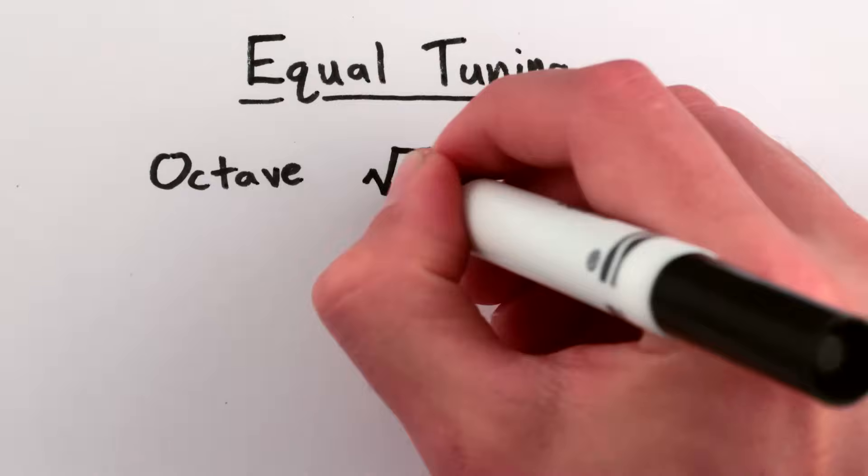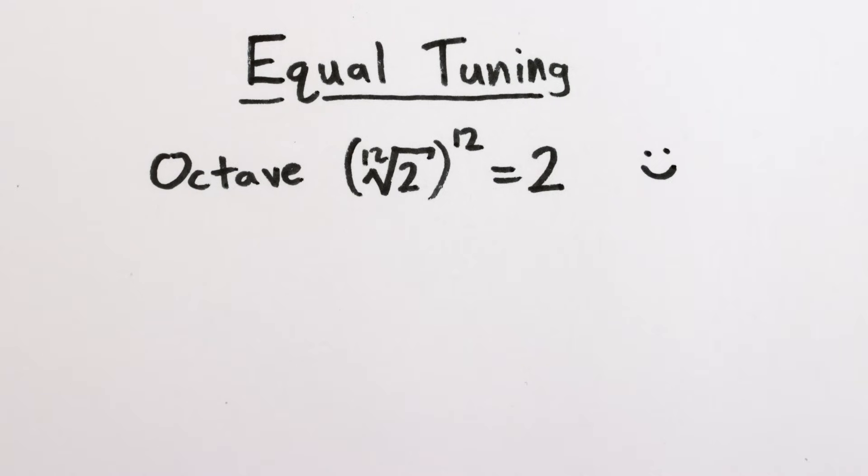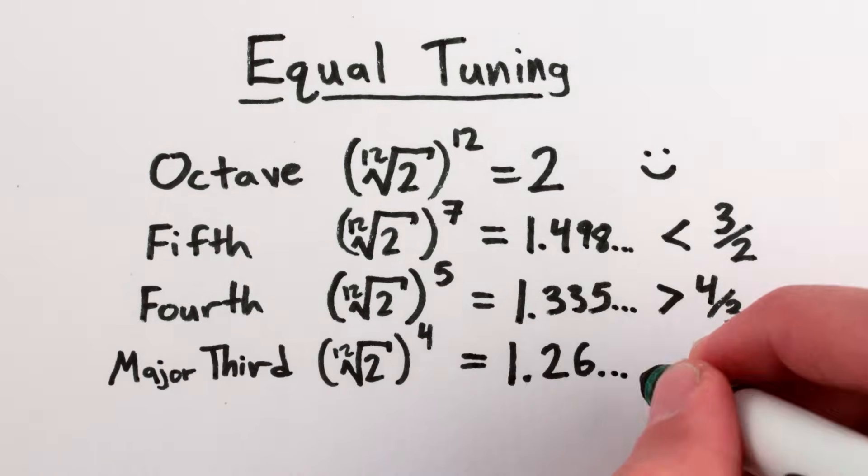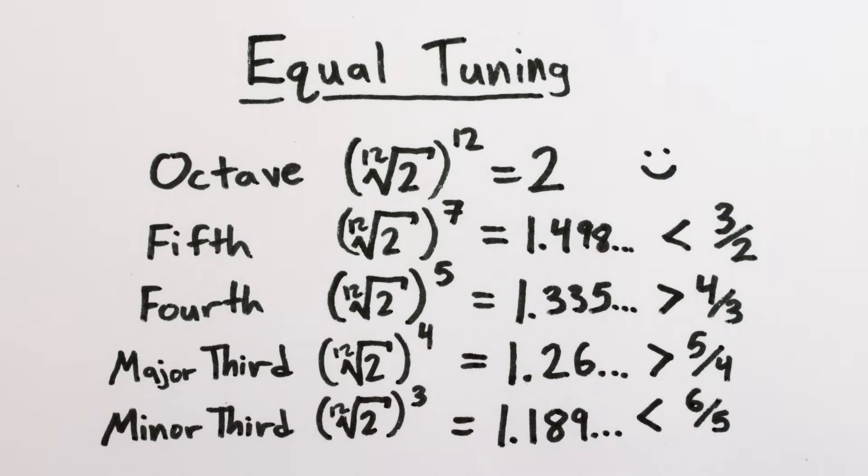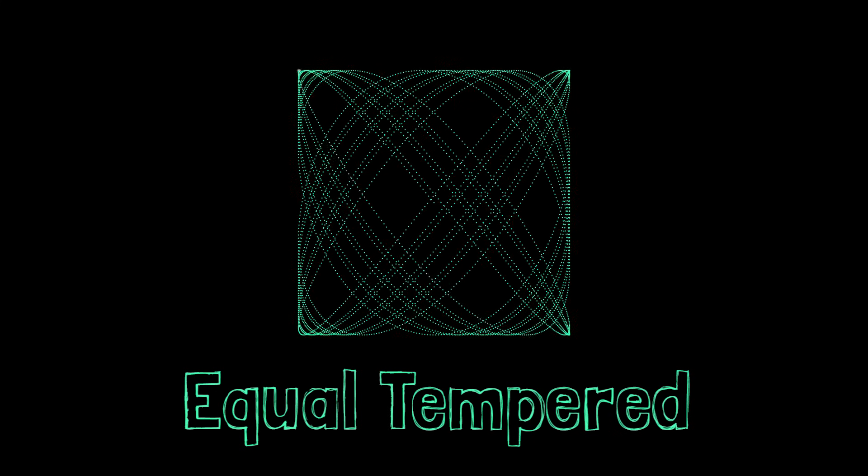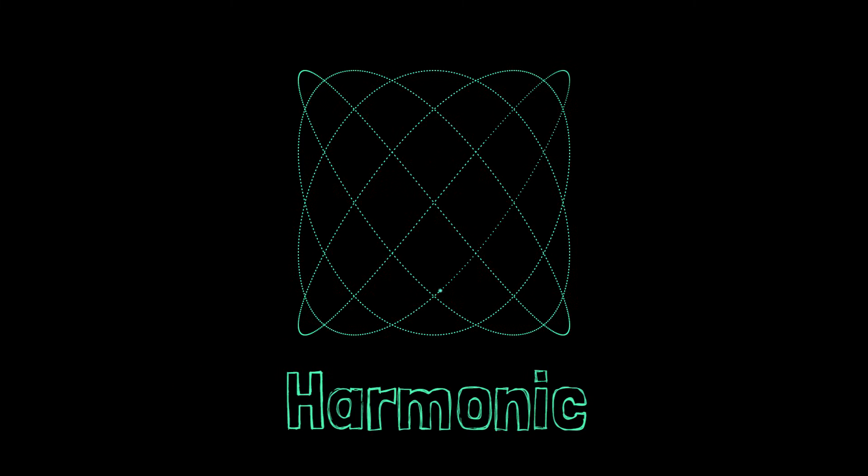However, the octave is the only perfect interval on an equally tuned piano. Fifths are slightly flat, fourths are slightly sharp, major thirds are sharp, minor thirds are flat, and so on. You can hear a kind of wah-wah effect in this equal-tempered chord, which goes away using harmonic tuning.